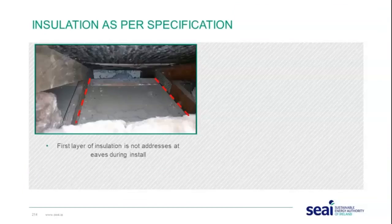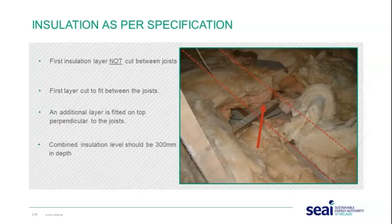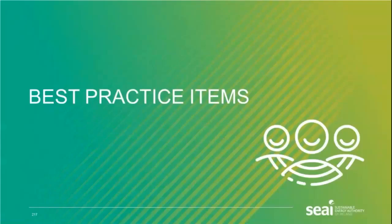Poor workmanship shows heavy duty electrical cables covered by insulation. Good workmanship shows heavy duty electrical cables all lifted on top of the insulation. Another installation issue: at the edge of the eaves, the first layer of insulation is not addressed during install — mould will form on the ceiling beneath. Ensure insulation is pushed all the way to the wall plate while maintaining adequate soffit ventilation. The first insulation layer should be cut between the joists, not raised across them; the additional layer should then be fitted on top and perpendicular to the joists.